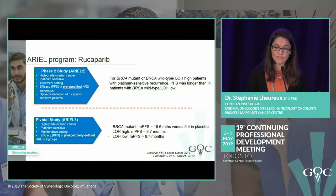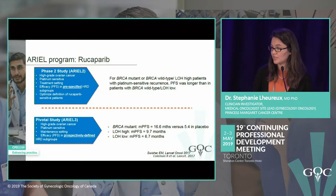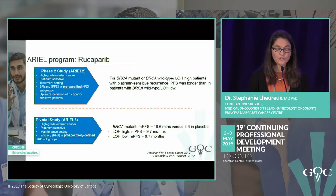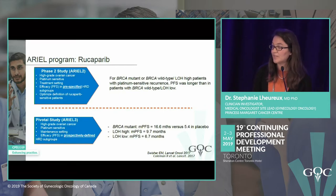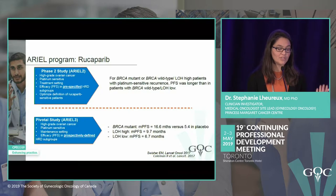Olaparib has now been approved in Canada for use at the time of recurrence in patients responding to platinum-based chemotherapy with a BRCA1 or 2 mutation, and hopefully soon in the first-line setting. It's also important to look at other PARP inhibitors — including rucaparib through the IEL program.